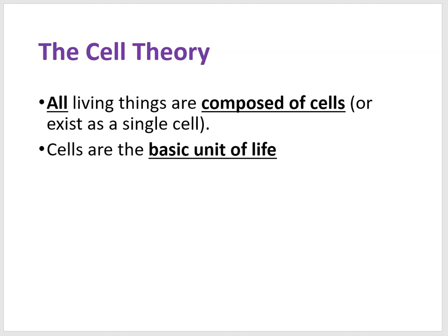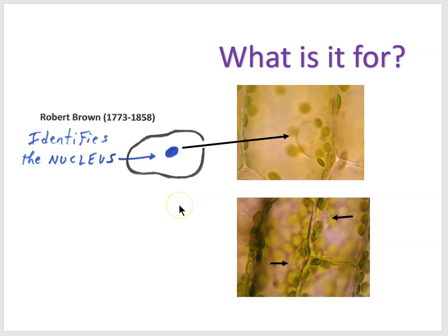Also in the 1800s, Robert Brown identified that plant cells seem to have this oval structure he called the nucleus. He looked at many different kinds of plant cells and would always find this oval structure inside them. Here we see the nucleus of a leaf cell.